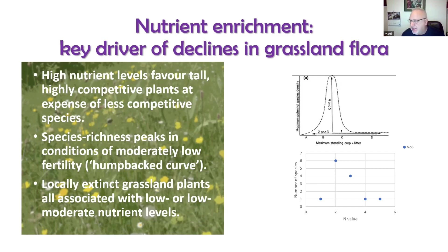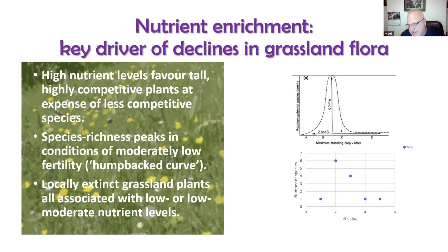Lots of species growing together in a given area peaks at moderate conditions of moderately low fertility. This is a model called the humpback curve, proposed by the late J.P. Grime, a plant ecologist at Sheffield University. Species richness really peaks in conditions of quite low fertility — not very very low, where not much grows — and drops off again at very high soil fertility. It's those intermediate levels of fertility where you get lots and lots of species occurring together.